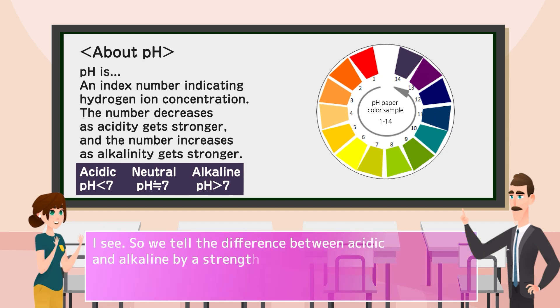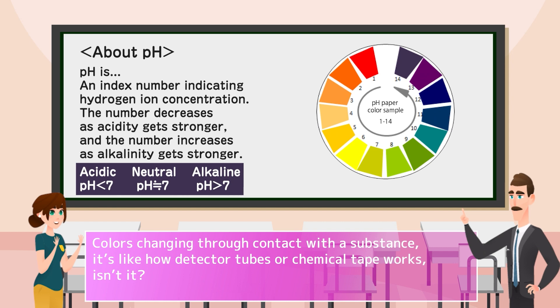I see. So we tell the difference between acidic and alkaline by a strength indicator known as pH. Colors changing through contact with a substance. It's like how detector tubes or chemical tape works, isn't it?